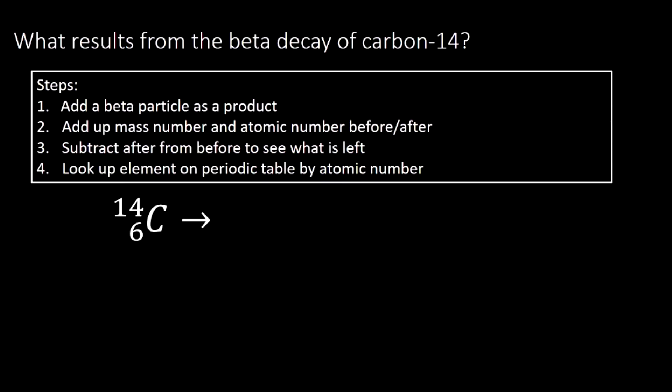How does this decay reaction work? We're going to write the beta particle as a product: zero minus one beta. We could do this one of two ways. We could add up the mass and atomic number before and after. Mass number before is 14, and my atomic number before is six. After the reaction, our mass number is zero and our atomic number is represented by that negative one. Or we can just remember that the beta particle increases the atomic number. So my mass number is going to stay the same at 14, and my atomic number is actually going to go up one to seven.